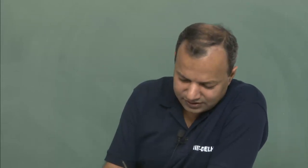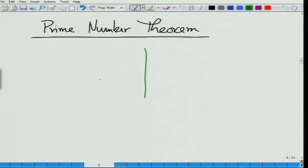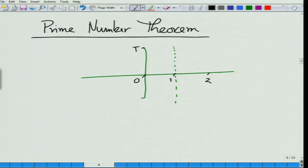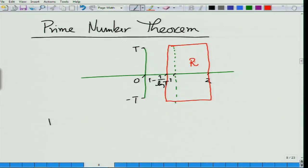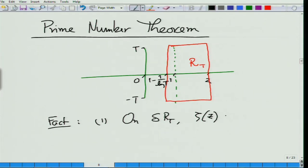If you remember, one of the bits and problems was that if you consider a rectangle R(t) here, with the boundary 1 minus 1 over log t, we create a region R(t), and you know that zeta(z) was order log t.